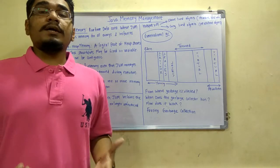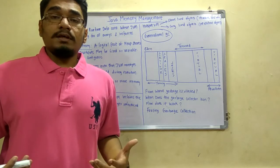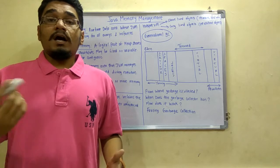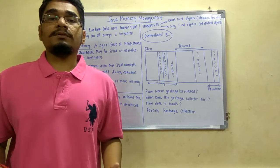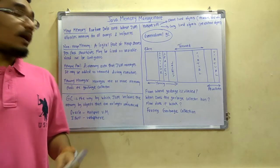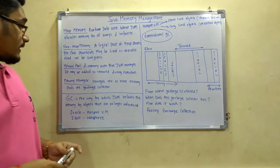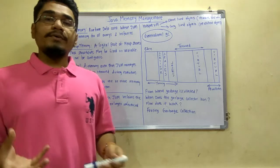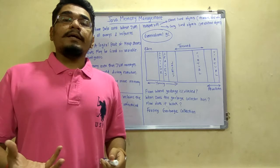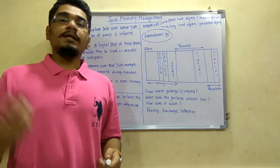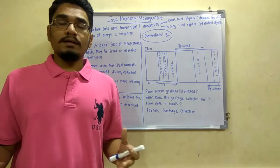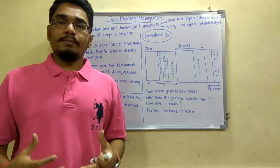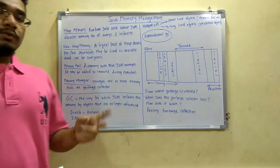Next we need to see what GC actually is. GC stands for garbage collection. Just like human beings are conscious about their health and fitness, Java is very conscious about its memory. If there is any object which is unallocated, it needs to be freed as soon as possible. For that, Java has a garbage collector — the GC — which is the way by which the JVM reclaims memory from objects that are no longer referenced.